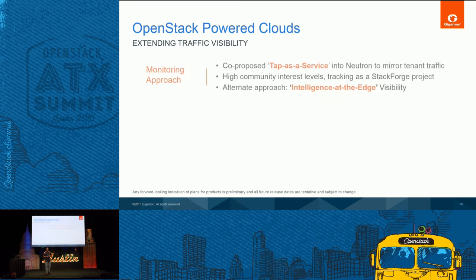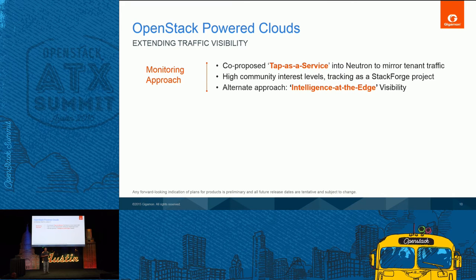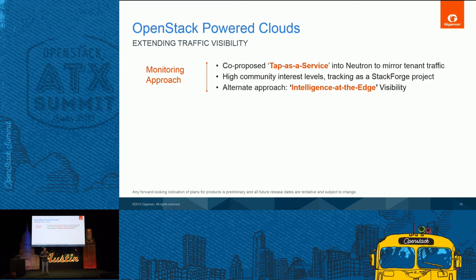We looked at two use cases. We proposed TAP as a service — Anil, our distinguished engineer from Gigamon, has a discussion with vendors today to talk about TAP as a service. While that progresses through the OpenStack community, we also developed an alternate approach called intelligence-at-the-edge visibility, where you get the traffic right in the VM itself and analyze it while we continue investing in TAP as a service for community adoption.